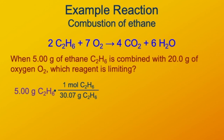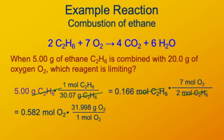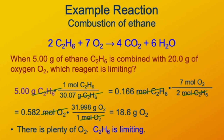First we convert grams of ethane to moles of ethane — that gives 0.166 moles of ethane. Then we convert that to moles of oxygen using the ratio of 7 moles of O₂ for every 2 moles of ethane, and we find we need 0.582 moles of oxygen. Using the molar mass of oxygen, the moles cancel out and we find we need 18.6 grams of oxygen. That's less than the 20 grams we have, so oxygen is present in slight excess — ethane is the limiting reagent.